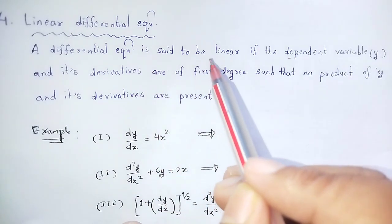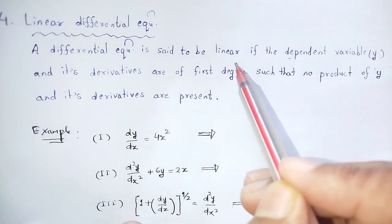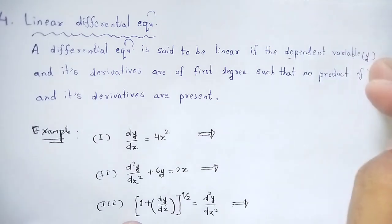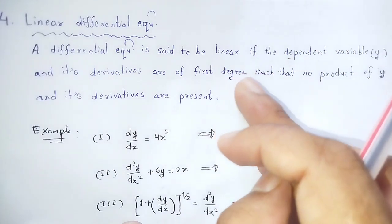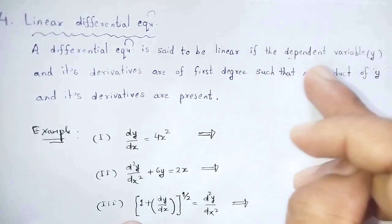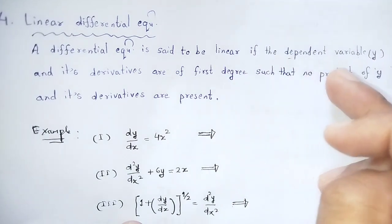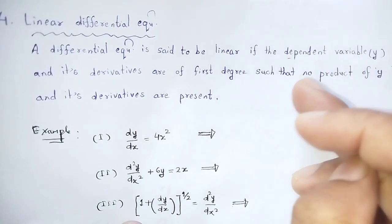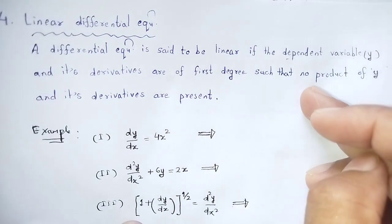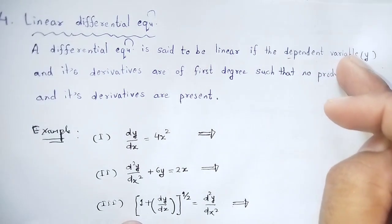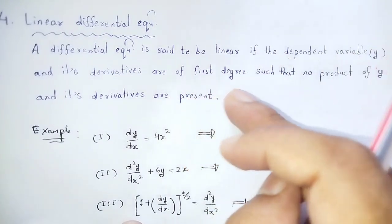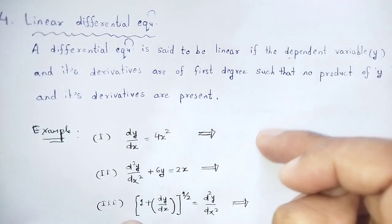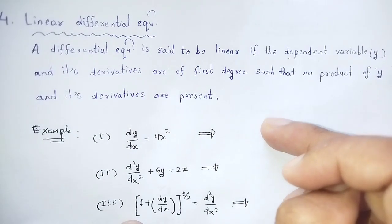In a differential equation, y is the dependent variable and x is the independent variable, since y = f(x). The derivatives of y with respect to x — such as dy/dx, d²y/dx², d³y/dx³ — are also dependent. For linearity, all these derivatives must appear only to the first power.